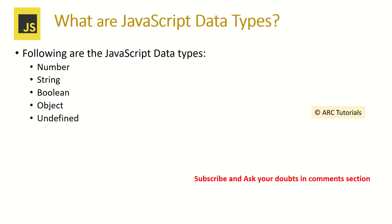What are the different data types available in JavaScript? The different data types available in JavaScript are Number, String, Boolean, Object, and Undefined.